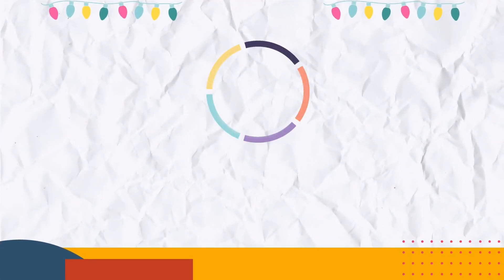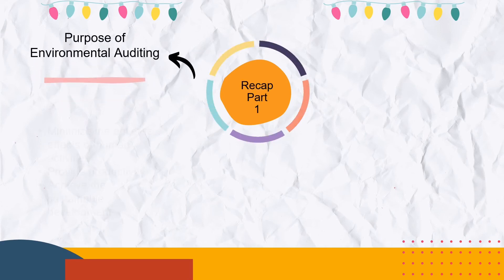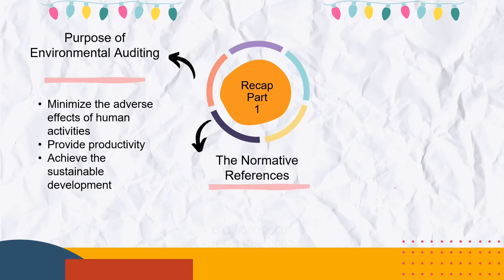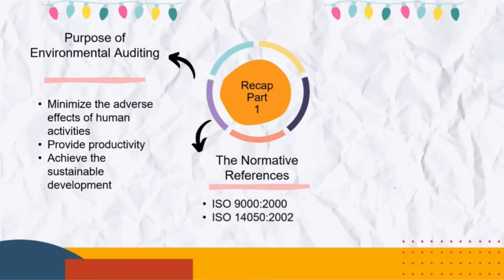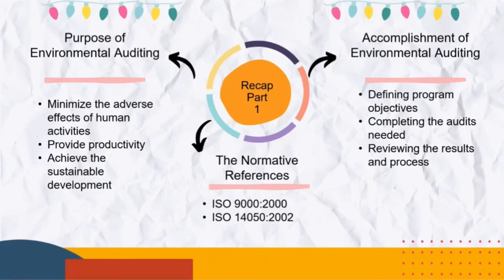Let's look into the recap of part 1. First, the purpose of environmental auditing: it is used to minimize the adverse effects of human activities, provide productivity, and achieve sustainable development. Second, the normative references cover ISO 9000:2000 and ISO 14050:2002. Third, the accomplishments of environmental auditing include defining program objectives, completing the audits needed, and reviewing the results and processes.